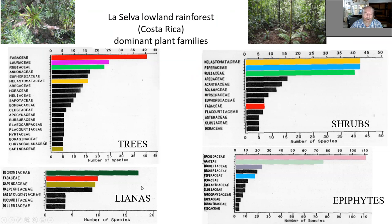Then lianas are dominated by Bignoniaceae — a big family dominated by lianas — but again Fabaceae, and then Sapindaceae and Malpighiaceae. So you can see that the same family has different life forms, like Fabaceae.